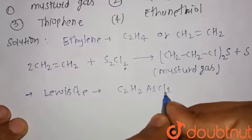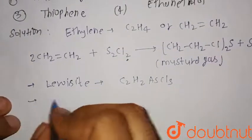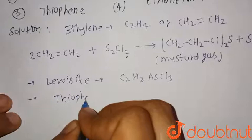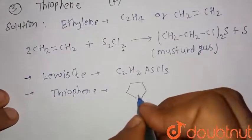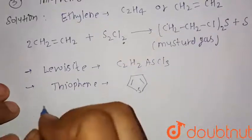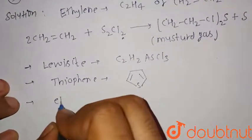C2H2 AsCl3 and the thiophene is - this is the heterocyclic compound, this is the thiophene.